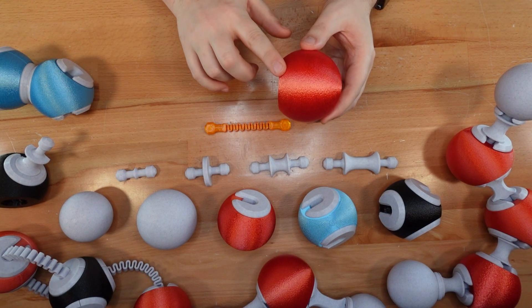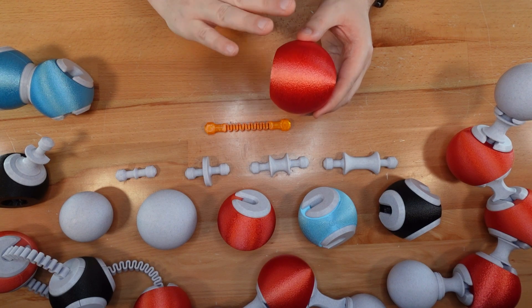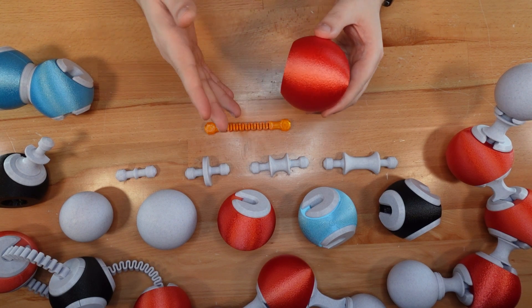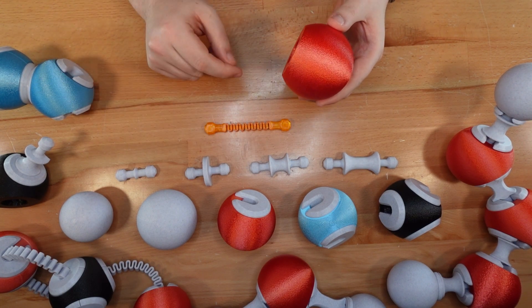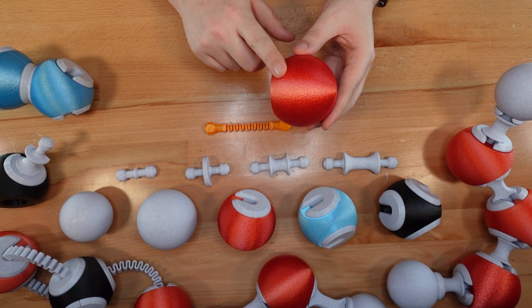For my prints, I added a very subtle 0.1 millimeter outer fuzzy skin to all the spherical surfaces. This doesn't have any practical purpose, but it gives the prints a nice feel and reduces the appearance of layer lines.